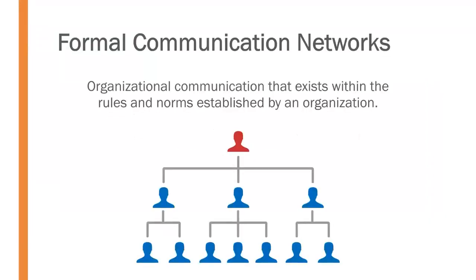Let's start with a discussion of formal communication networks, which is organizational communication that exists within the rules and norms established by an organization. These are generally widely recognized, formalized, and codified within an organization. They typically follow some sort of hierarchical structure and may involve process as well as the flow of information — what's the proper process for communicating with other people in the organization? Those are formal communication networks.